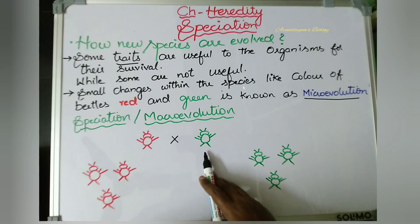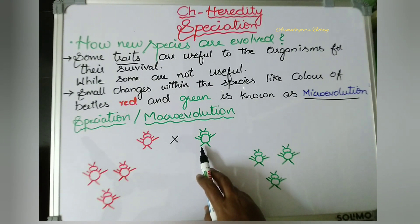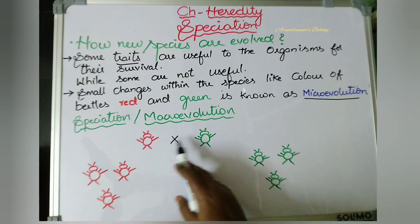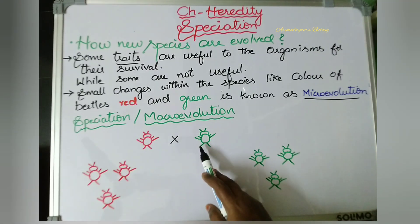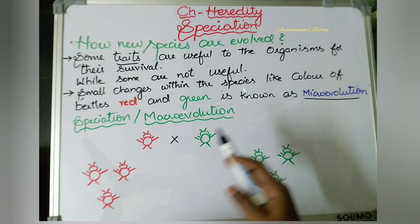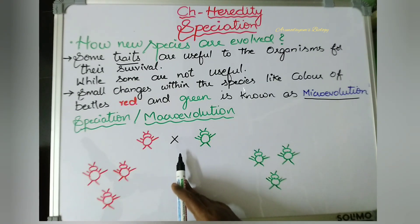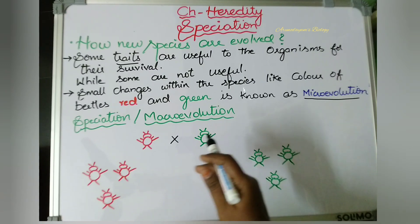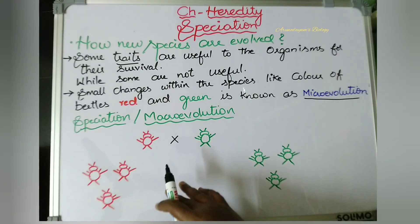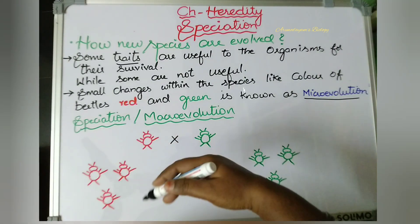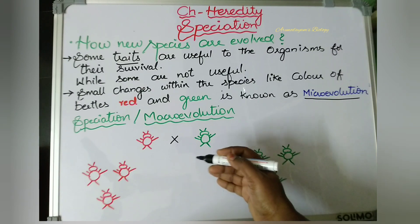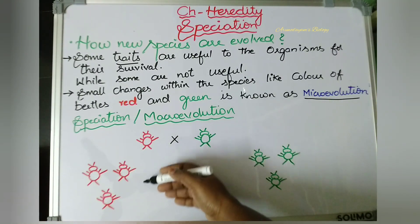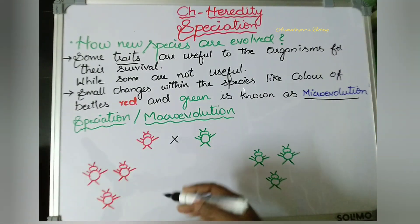We will take beetles as an example. For example, red color beetles and green color beetles are present in an area. These two belong to the same species — only their color is changed. Both of them can mate with each other and reproduce among themselves. Now, accidentally, some crows separated these two beetles — they carried some of the red color beetles and dropped them somewhere far away from where the green color beetles are located.